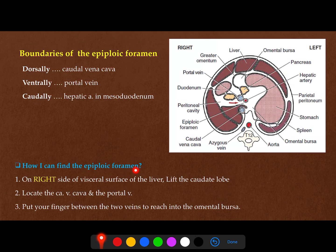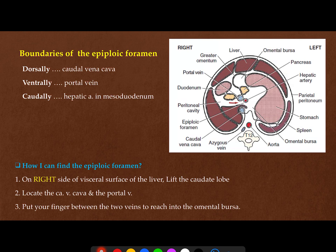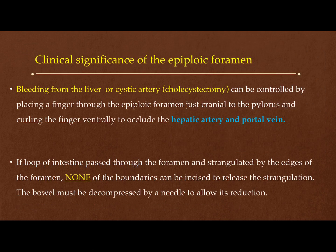To find the epiploic foramen: go to the right side of the visceral surface of the liver, lift the caudate lobe, locate the caudal vena cava and the portal vein, and put your finger between these two veins to reach into the omental bursa. This is also important because in operations like cholecystectomy, if there is bleeding from the cystic artery or near the liver, you can place your finger at the epiploic foramen and apply compression to control the bleeding.